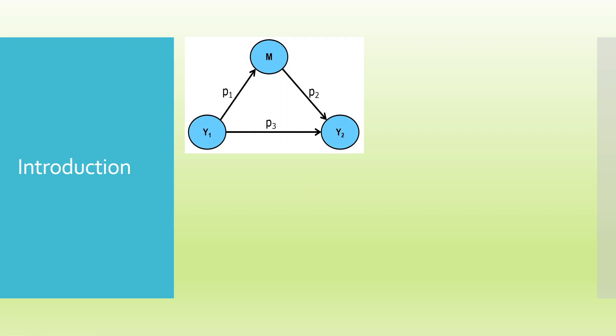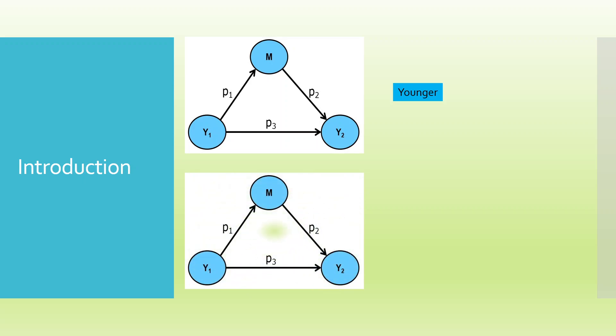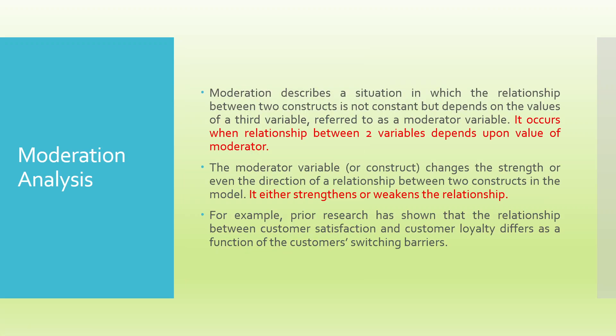Now what is moderation? This particular path may be different for the younger child and it may happen that this particular path is different for the elder child. It means the younger child may be able to influence the father directly, but the elder one may not — and that's the reason there is a moderation. Moderation describes the situation in which the relationship between two constructs is not constant but depends on the value of a third variable, referred to as the moderator variable. The moderator variable can be gender, large-scale industry, or small-scale industry. It has the capacity to change the direction or even the strength of the relationship, either strengthening or weakening it.